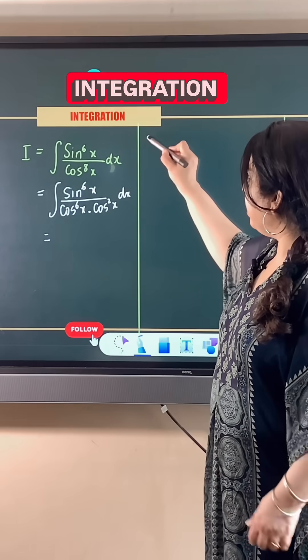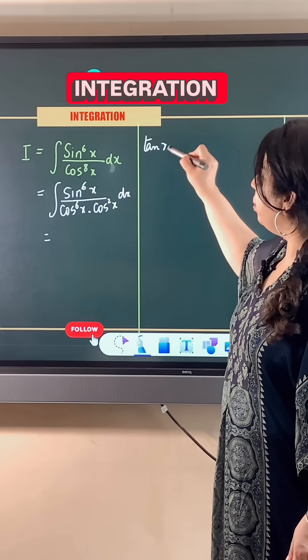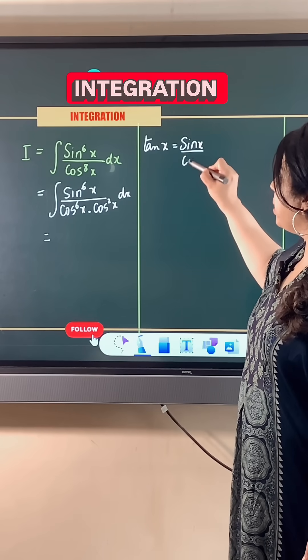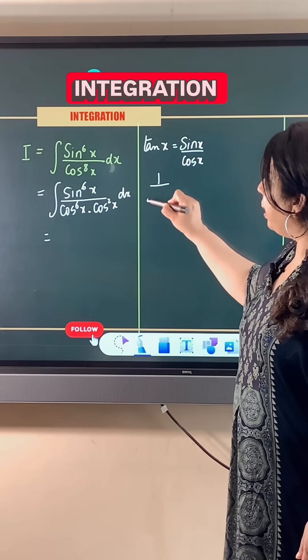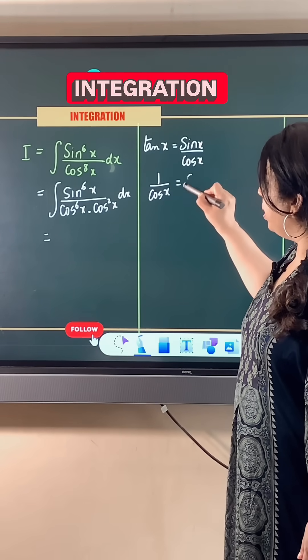Now, making use of trigonometric identities, tan x is equal to sin x divided by cos x and 1 divided by cos x is equal to secant x.